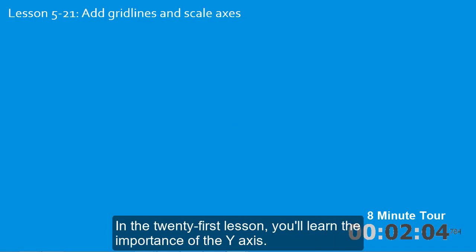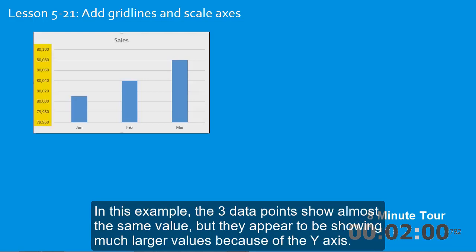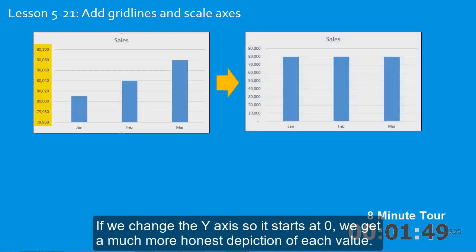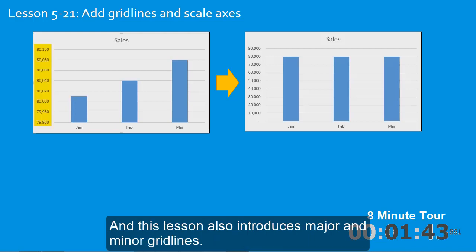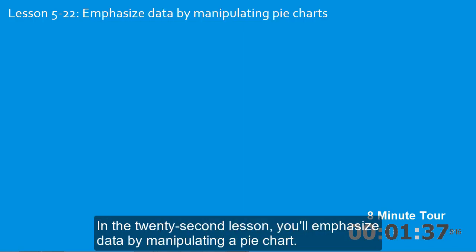In the twenty-first lesson you'll learn the importance of the y-axis. In this example the three data points show almost the same value, but they appear to be showing much larger values because of the y-axis. If we change the y-axis so it starts at zero, we get a much more honest depiction of each value. And this lesson also introduces major and minor grid lines.